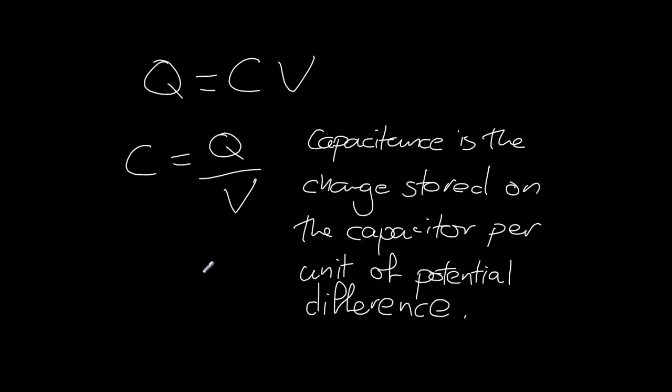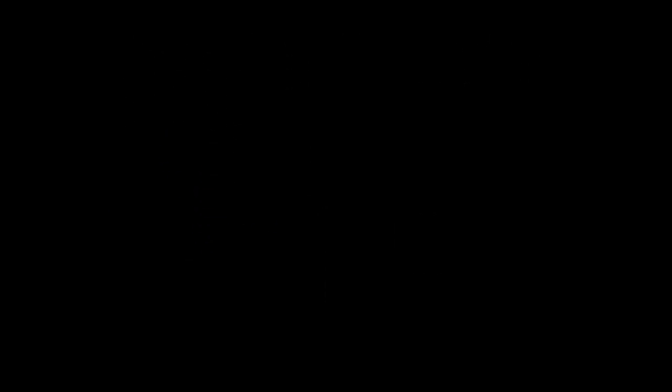The next step that we need to consider is the units for capacitance. We know that the capacitance is equal to the charge per unit of potential difference. If we look at the SI units that we're dealing with here, the SI unit of charge is the Coulomb, and the SI unit of potential difference is the volt.